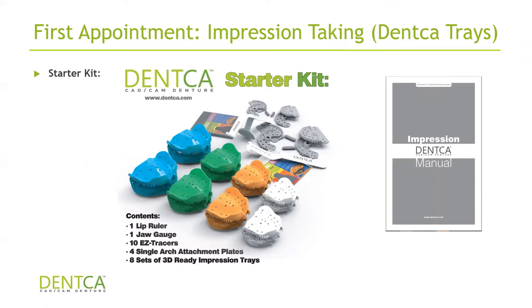These trays come in pairs of upper and lower. You also need single arch trays if you're doing single arches, and you can buy them individually. They come in four different sizes — extra large, large, medium, and small — and they're color coded for your convenience. Or you can buy them as a starter kit. The advantage of a starter kit is that you have everything you need to do eight to ten cases right off the bat, so you're not going to be missing pieces.